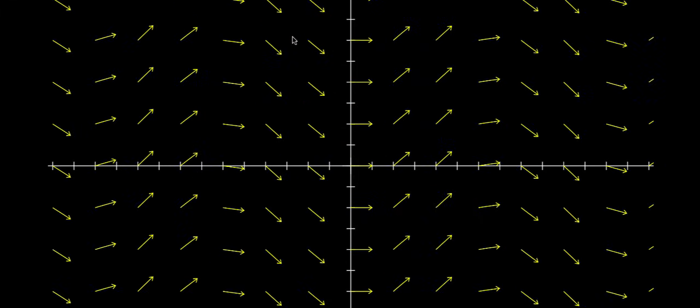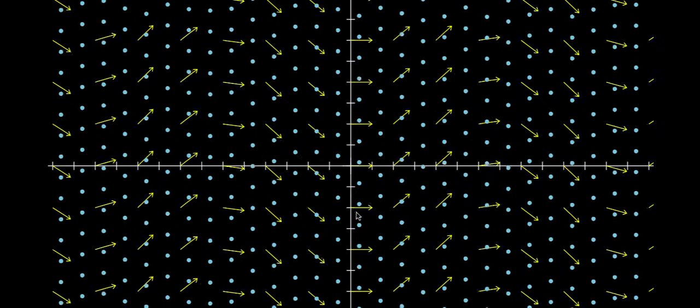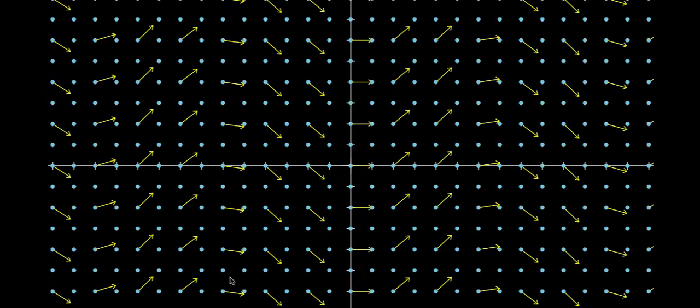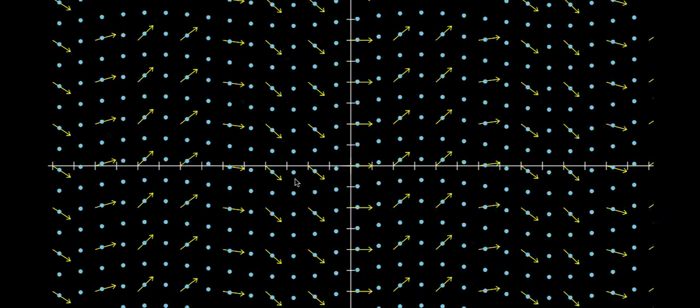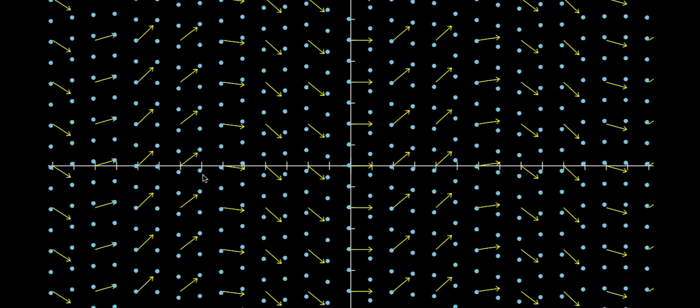For example, this particular one, as you play the animation, as you let the particles move along the vectors, there's no change in the density. At no point do a bunch of particles go inward, or a bunch of particles go outward. It stays constant. And that turns out to have a certain mathematical significance down the road. You'll see this later on, as we study a certain concept called divergence.